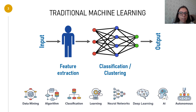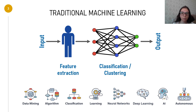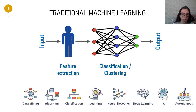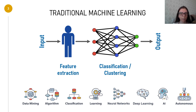Machine learning is a specialized method that allows you to train a computer without resorting to programming. This is similar to the process of teaching an infant who learns to classify objects and events and also find the relationships between them.